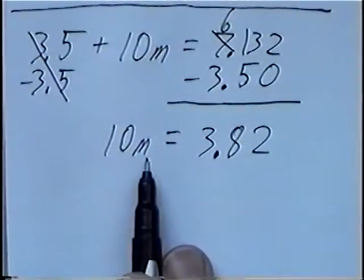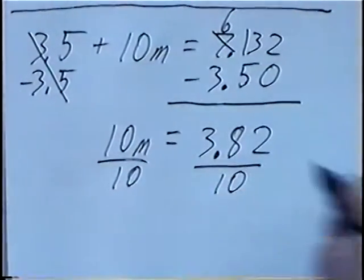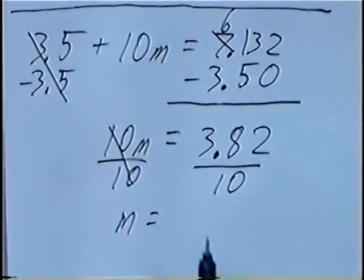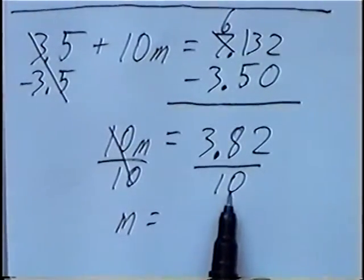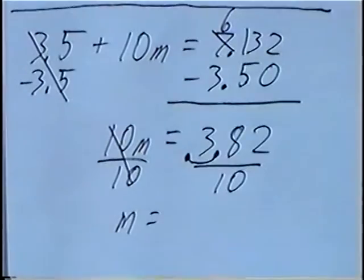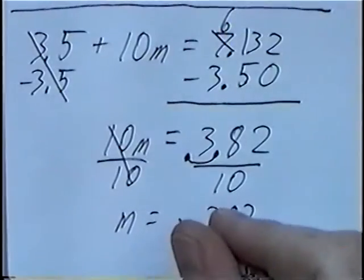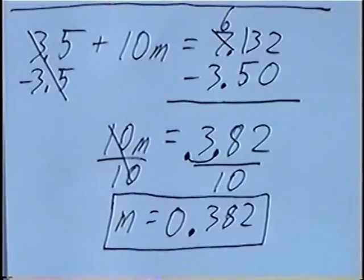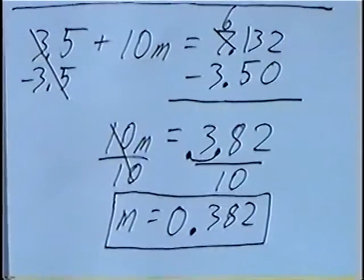And last step: 10 times m, or multiplying by 10 — the opposite would be dividing by 10, so the tens would cancel. You could use long division: 3.82 divided by 10. One shortcut — when you divide by 10, you can move the decimal one spot to the left, and that gives the answer. So we'll have 0.382. We can put a zero in front of the decimal point, so m equals 0.382.